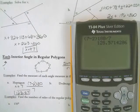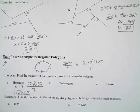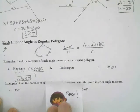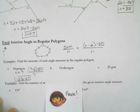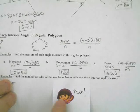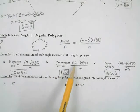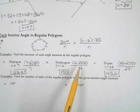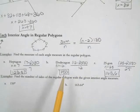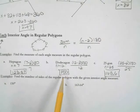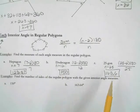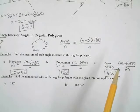Pause the video and try B and C. A dodecagon has 12 sides: 12 minus 2 times 180, divided by 12, gives 150 degrees. So each angle in a regular 12-sided figure is 150 degrees. For a 25-gon with 25 sides: 25 minus 2 times 180, divided by 25, gives each angle as 165.6 degrees.